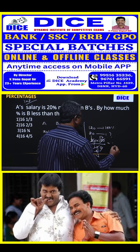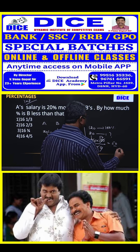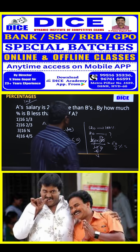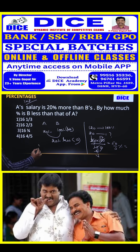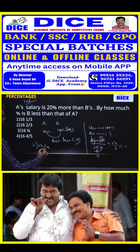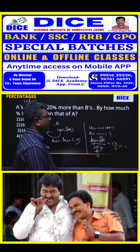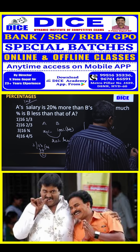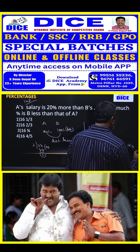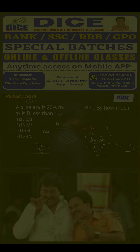So I got 50 by 3 percent. Dividing 50 by 3: 3 sixteens are 48, remainder 2 — so the answer is 16 and 2 by 3 percent. This is a very very very important model.